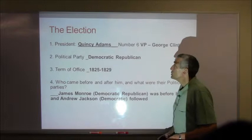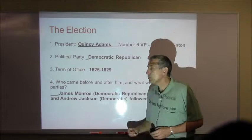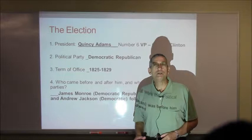John Quincy Adams — sixth president of the United States. Many people like to refer to him as Quincy Adams because it's easier not to confuse him with his dad that way. He's elected following James Monroe. His vice president is George Clinton. He was a member of the Democratic-Republican Party, with a term of office of 1825 to 1829.